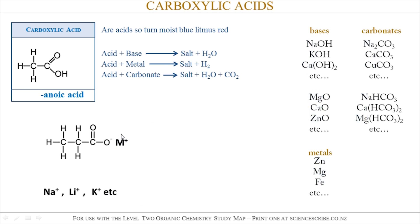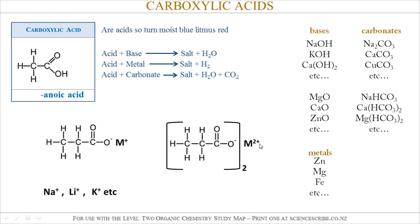In that formula, the metal had only a +1 charge — things like Na⁺, Li⁺, and K⁺. If your metal cation has a 2+ charge, such as Ca²⁺, Mg²⁺, or Fe²⁺, then you need to put brackets around the carboxylate anion. In this example, that anion is called the propanoate anion.